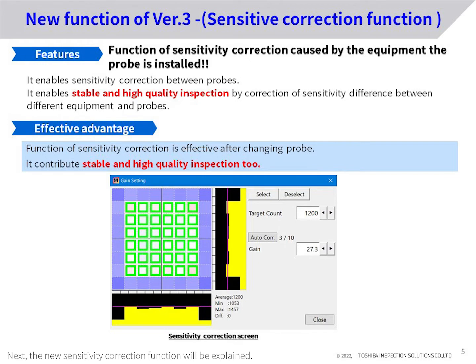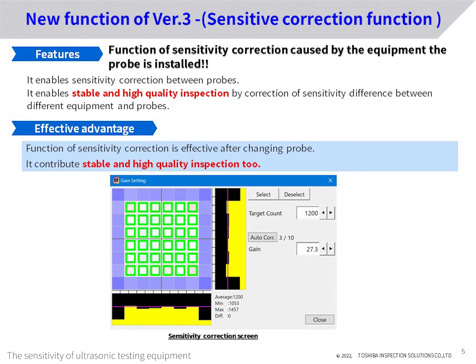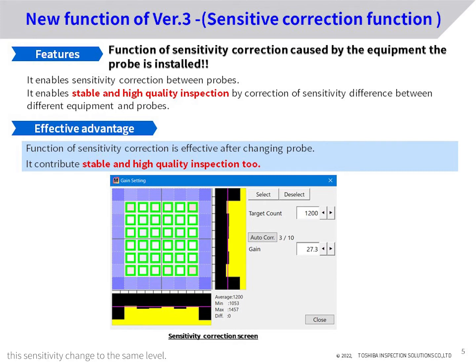Next, the new sensitivity correction function will be explained. This function is especially effective when using multiple Matrix I6 testing equipment. The sensitivity of ultrasonic testing equipment will inevitably change depending on the combination with the probe. The sensitivity correction function can correct this sensitivity change to the same level. As a result, the sensitivity of all Matrix I6 testing equipment can be kept constant, providing high and stable inspection quality.